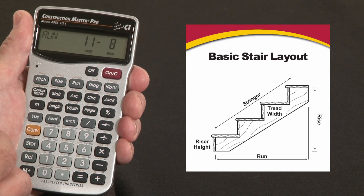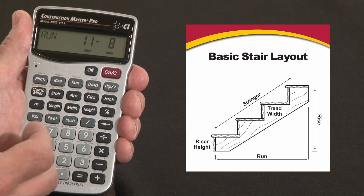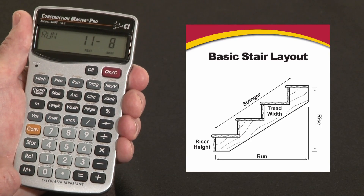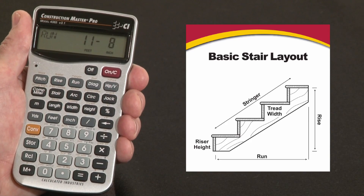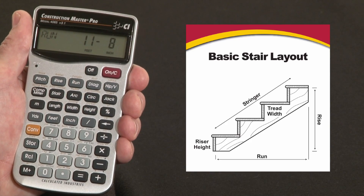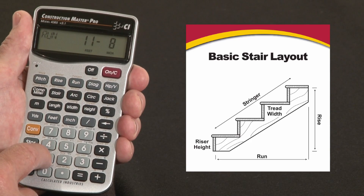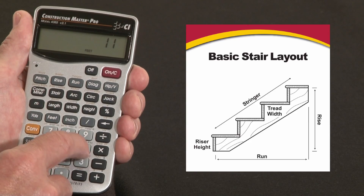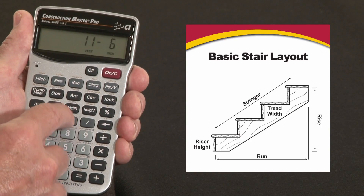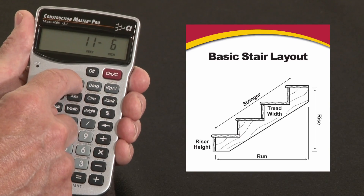Now in another situation — let's say you're building these stairs into a basement and you'll only have 11 foot 6 inches of horizontal run to work with — so we would put that in as 11 feet 6 inches and call that the Run.